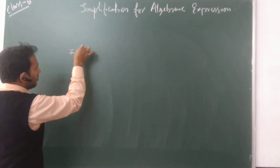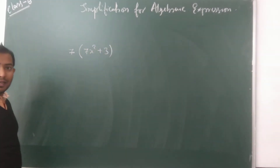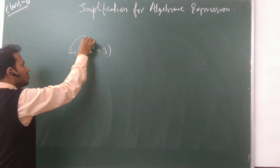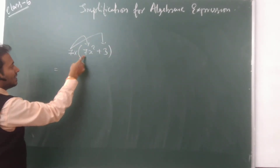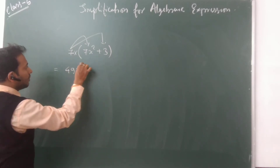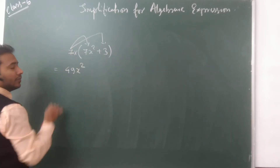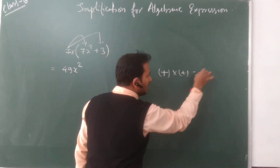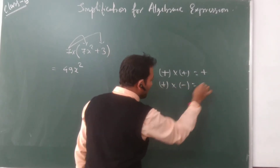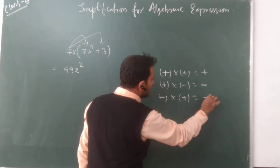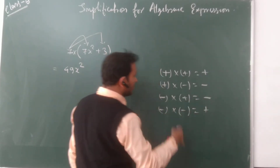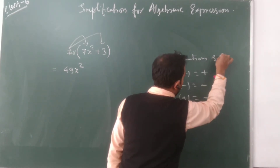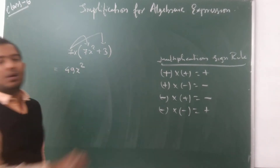Let's take 7 and bracket 7x² + 2. When nothing is written, that means there is a multiplication. We need to multiply 7 with each part inside. The multiplication sign rule is: plus times plus gives plus, plus times minus gives minus, minus times plus gives minus, and minus times minus gives plus. You should know about this multiplication sign rule, otherwise you'll make mistakes.